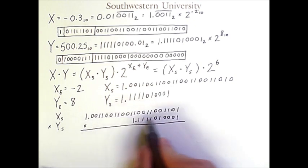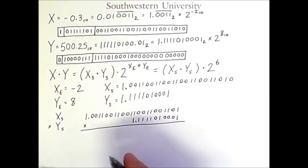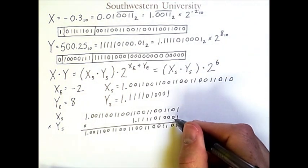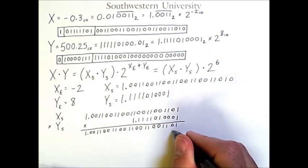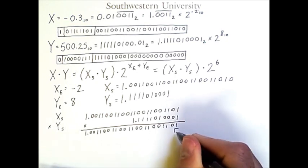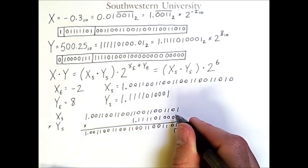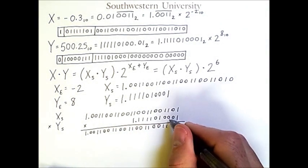Which we haven't done with binary numbers yet, so let's see how it works. 1 times this whole number means that I put that whole number on this line here, which I'll do. Then I would do 0 times that whole number and put it here in this position one column over. Of course, 0 times this whole number will be 0, so let's just skip that and leave it out.